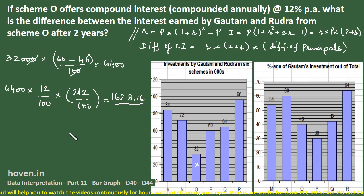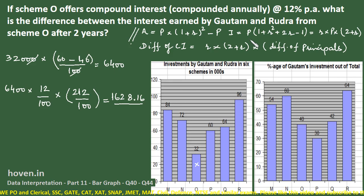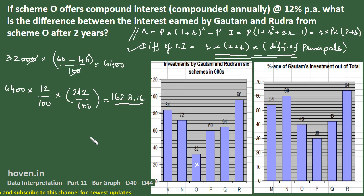Some people calculate the long way — computing each person's investment, then each person's interest separately — which takes too long. Instead, derive the formula first so that many terms cancel and come out common. This was the main simplification. The same approach applies to all compound interest and simple interest problems, as shown in those chapter videos.